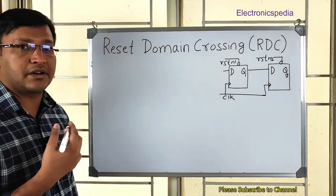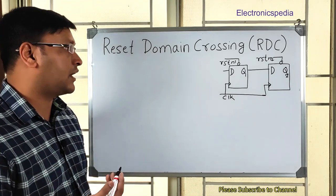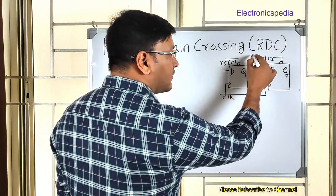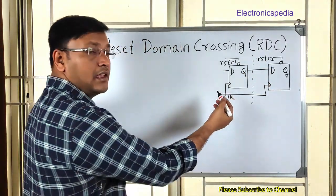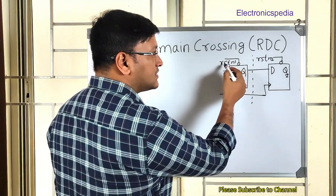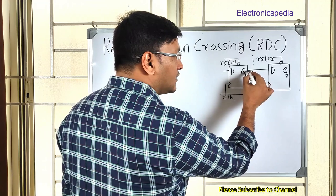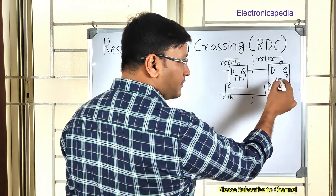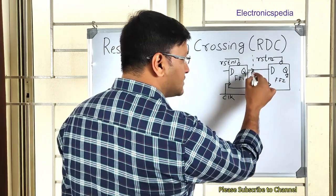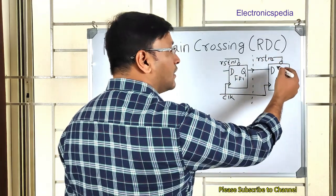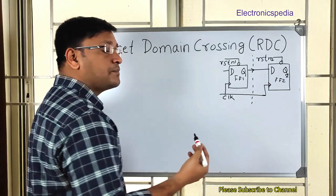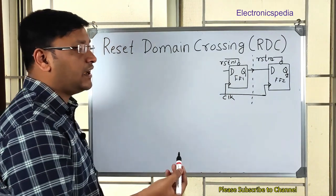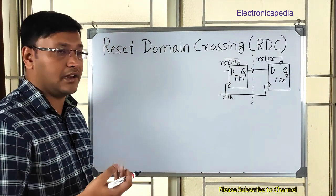Before we proceed with the reset domain crossing techniques, I'd like to explain what reset domain crossing is one more time. Reset domain crossing is when data is going from one reset boundary to another reset boundary. Here we have two resets — reset_n1 and reset_n2. The data launched from flip-flop one is captured by flip-flop two, moving from the reset one domain to the reset two domain. When this happens, the destination flop can go into a metastable state, causing your chip to fail.